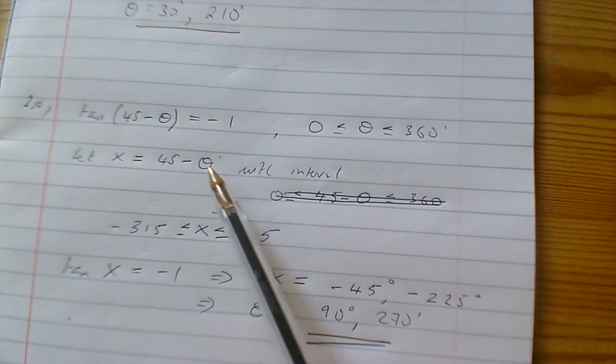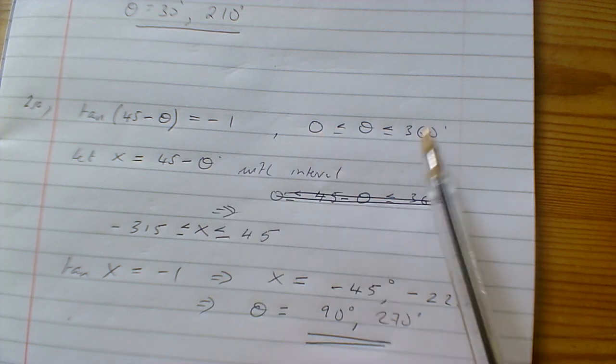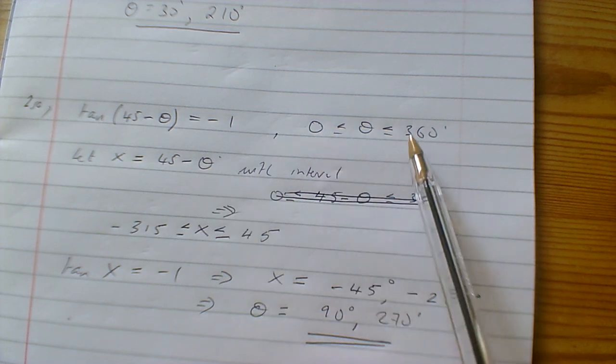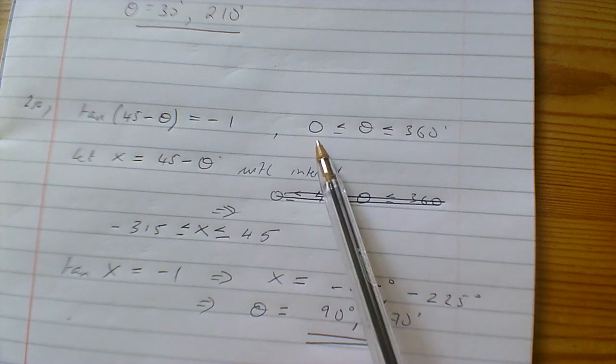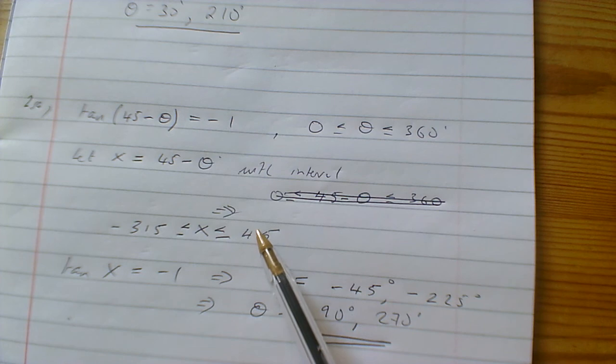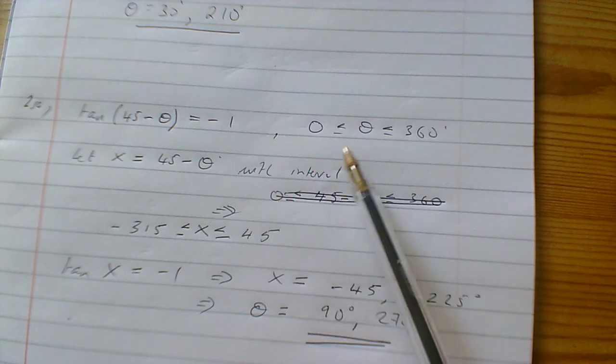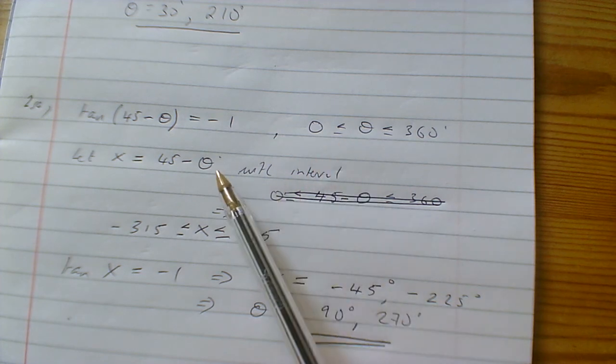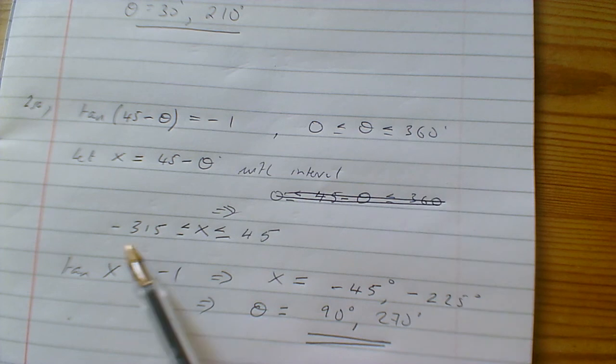We adjust the interval by substituting the endpoints of the original interval. So 45 - 0 = 45, and 45 - 360 = -315. We end up with the interval [-315, 45].